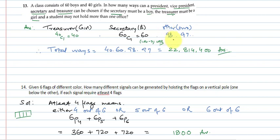Question number 14: Given six flags of different colors, how many different signals can be generated by hoisting the flags on a vertical pole, one below the other, if each signal requires at least four flags? So to make a signal, we can either use four flags, five flags, or six flags.